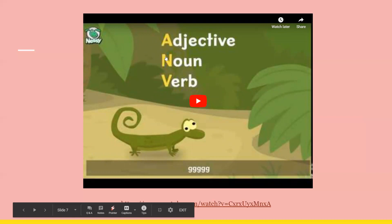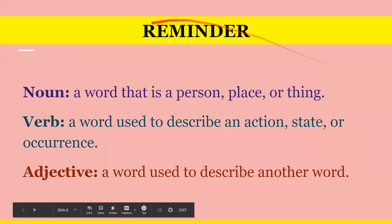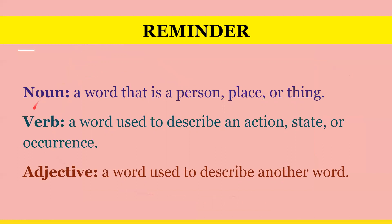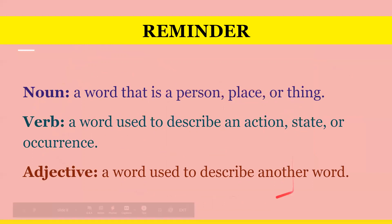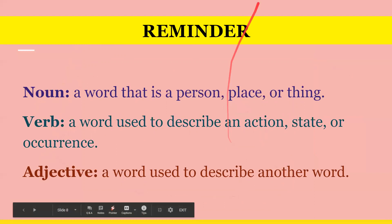So, as a reminder: a noun is a person, place, or thing. A verb is an action word. And an adjective is a descriptive word. Alright. Hope you have a great day. Thank you!